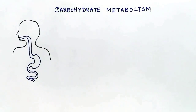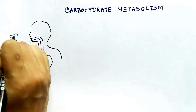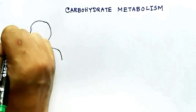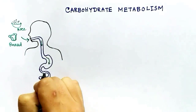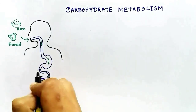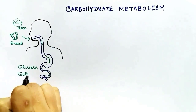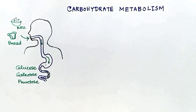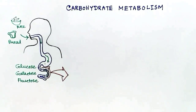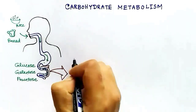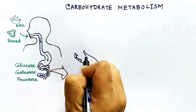Foods such as bread, rice, and noodles are rich in carbohydrates. The long-chain carbohydrates are broken down in our digestive system by digestive enzymes, and the monomers of the carbohydrates are mainly glucose, galactose, and fructose.